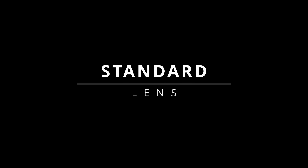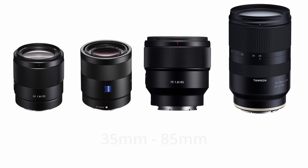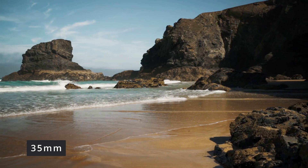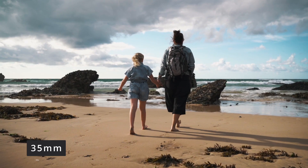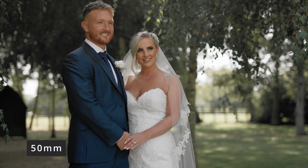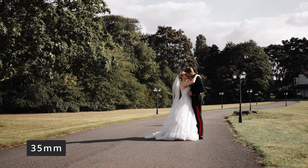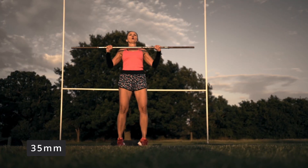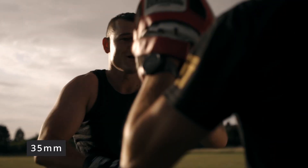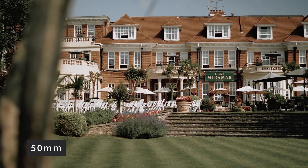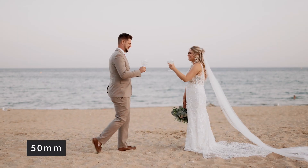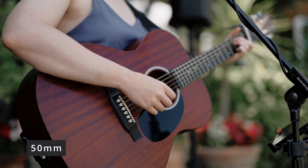Next are standard lenses, in the range of 35 to 85 millimeters — great for street, travel, and portrait photography and videography. 35 millimeters gives a wider view, perfect for full body and half body shots, but be careful: used too close to a human face it will create distortion. The most popular — and my favorite — is 50 millimeters, which closely matches what the human eye sees.